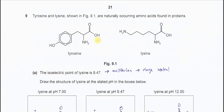Question 9. Tyrosine and lysine are shown in Figure 9 — this is their structure. They are both amino acids.